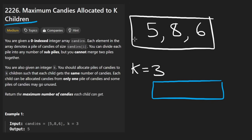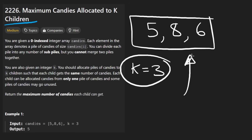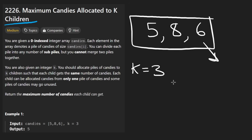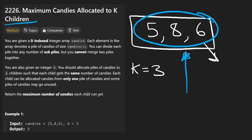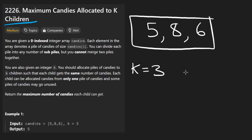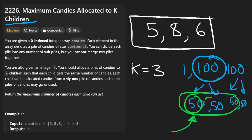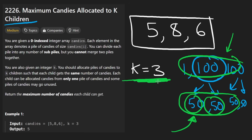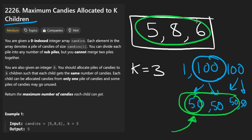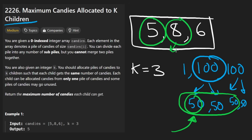One of the first things I thought of was: if we already have k piles, why would we ever want to split into more? But that's not always the case. For example, with 1, 100, 100 and k=3: if you take one 100 and split it into 50 and 50, and do the same with the other 100, you end up with at least three piles each of 50. So it's not true that once you have k piles, you can stop.